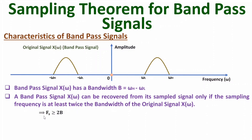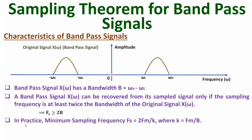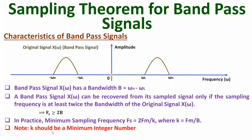This theorem is not complete just with that — you need to understand one more equation. In practice, the minimum sampling frequency fs should be 2FM divided by k, where k is FM divided by B. If you substitute k equals FM over B, you get fs equals 2B, which is the minimum sampling frequency. But one important point: k should be a minimum integer number. For example, if you get k equals 1.4, then you consider k equals 1. If k equals 2.7, then you consider k equals 2, not 2.7. So k must always be the minimum integer number.